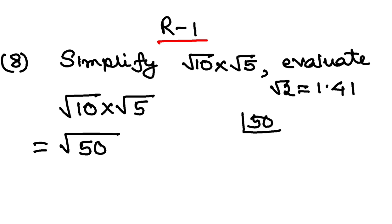Now, 50 if I prime factorize, that is 25, 5, 5, 5. So, this can be written as 2 into 5 square.